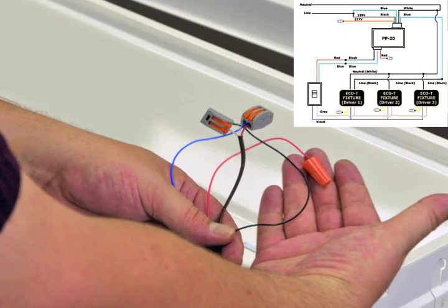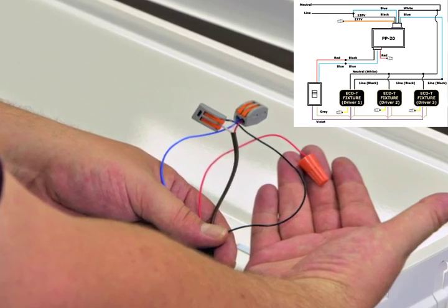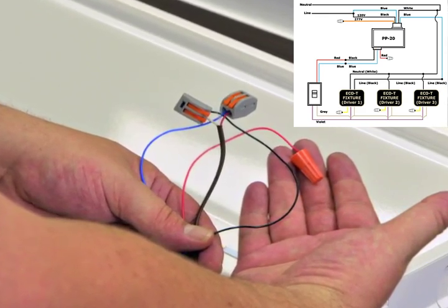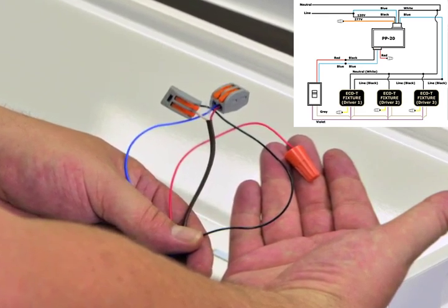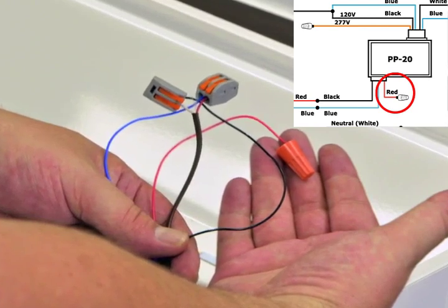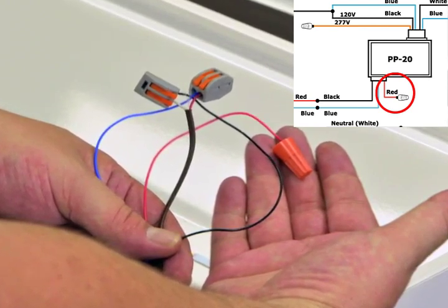We have our main power connected, so let us now take a look at connecting the PP-20 communication leads to the wall dimmer and from the wall dimmer to the fixture control leads. First, let's cap off the red wire on the PP-20. We will not be needing the red wire with the MaxLite Eco-T lay-in troffer.